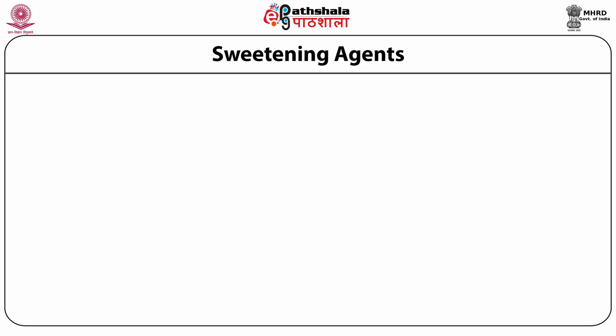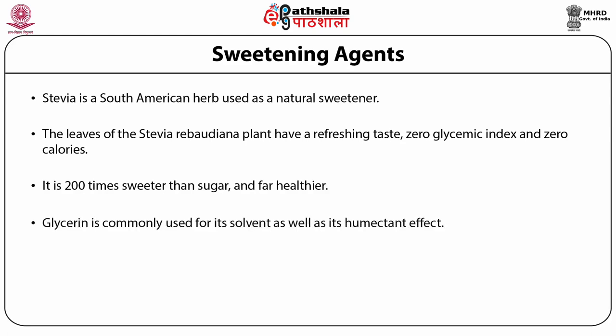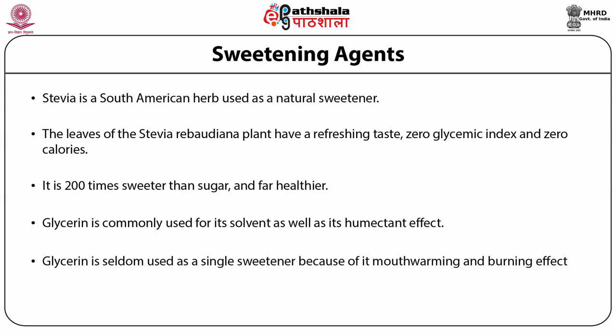Out of all sweeteners discussed, stevia is a South American herb used as a natural sweetener. The leaves of the Stevia rebaudiana plant have a refreshing taste with zero glycemic index and zero calories. It is about 200 times sweeter than sugar and far healthier, and can be administered to patients suffering from type 2 diabetes. Glycerin is commonly used for its solvent as well as humectant effect, but is seldom used as a single sweetener because of its mouth-warming and burning effect.